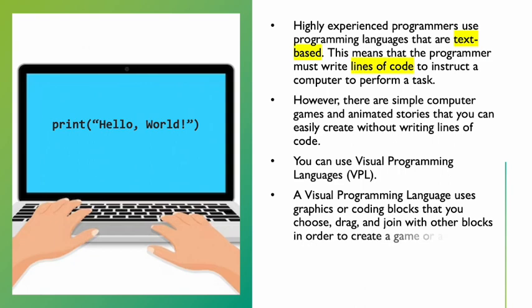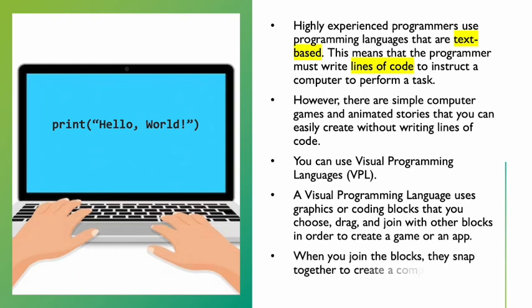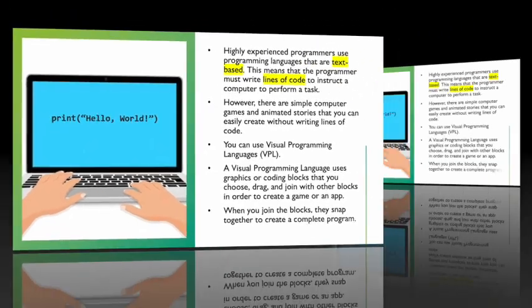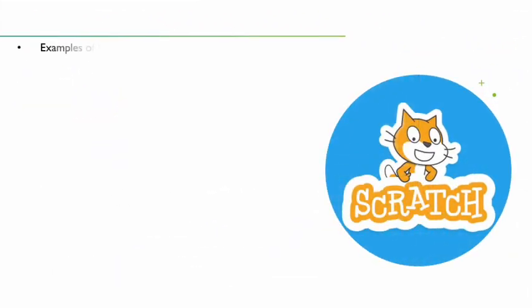A visual programming language uses graphics or coding blocks that you choose, drag, and join with other blocks in order to create a game or an app. When you join the blocks, they snap together to create a complete program. Examples of visual programming languages are Scratch and Blockly.